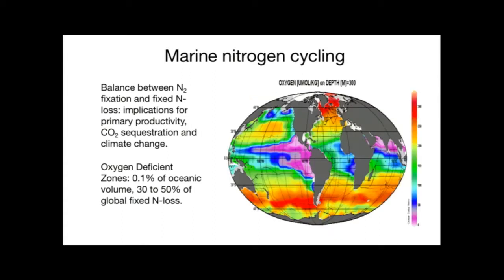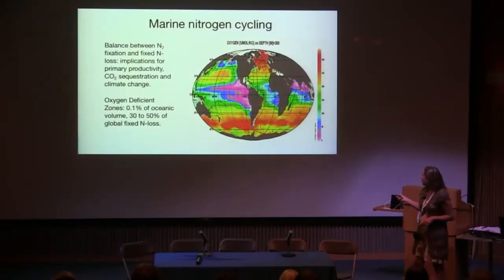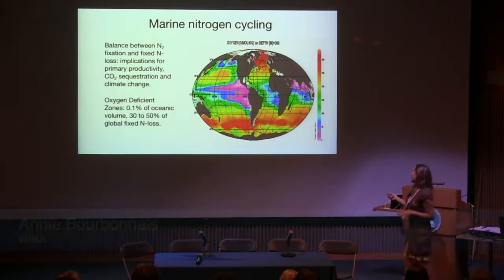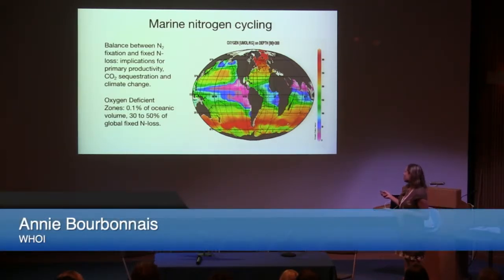Although oxygen deficient zones only occupy a small percentage of the oceanic volume, 30 to 50 percent of the global fixed nitrogen loss occurs in these regions. The main oxygen deficient zones — which I will call ODZs — are located in the eastern tropical North and South Pacific and the Arabian Sea.